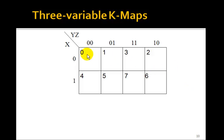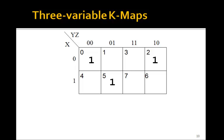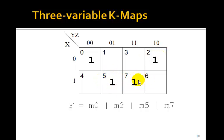Let's review min term labeling. The columns go 00, 01, 11, 10 — so min terms are 0, 1, 3, 2 across the top row, and 4, 5, 7, 6 across the bottom row. You've got to remember to skip the standard binary order. So if I give you f equals the sum of 0, 2, 5, 7, you can place a 1 in those positions and draw the Karnaugh map directly.